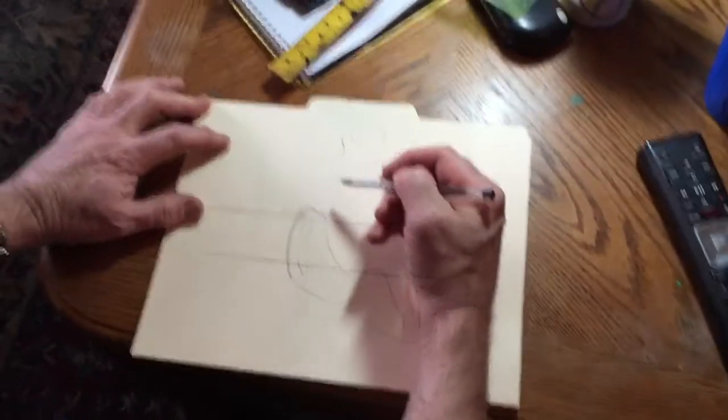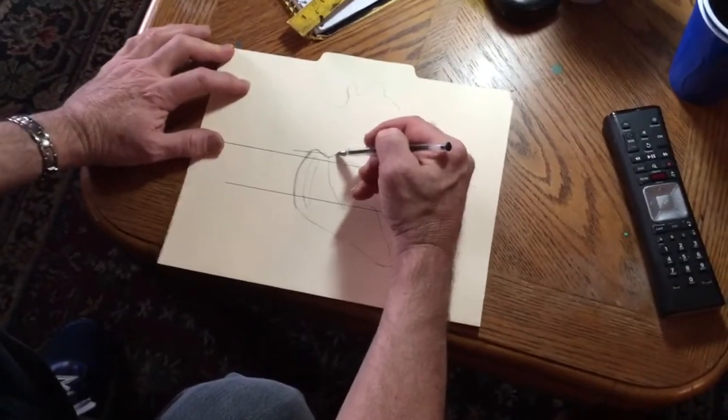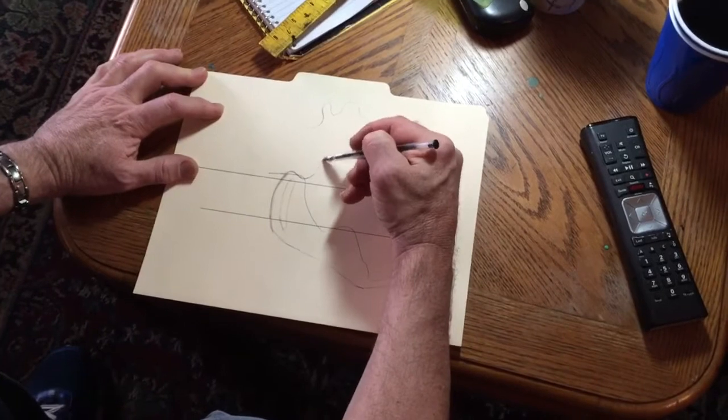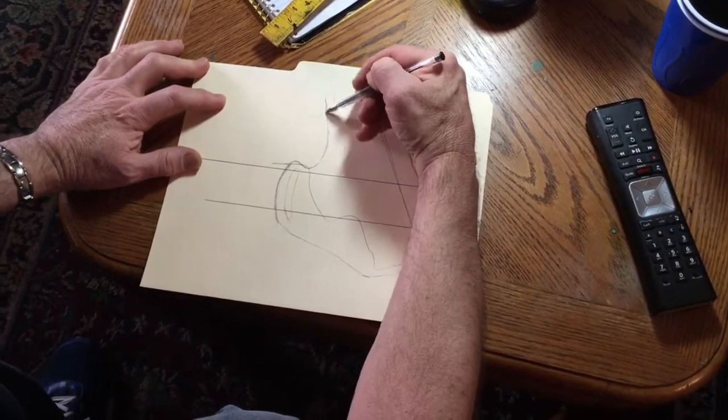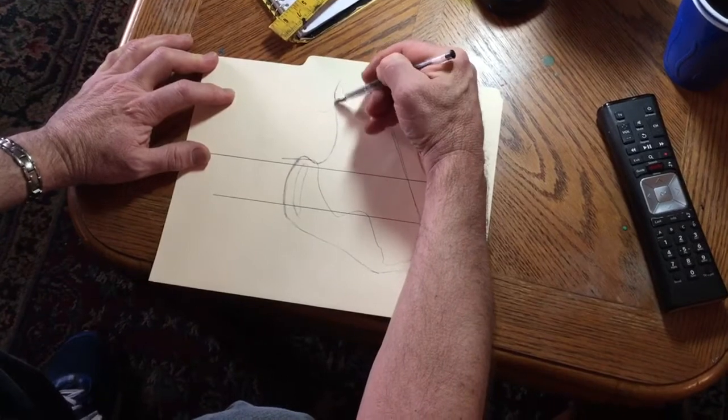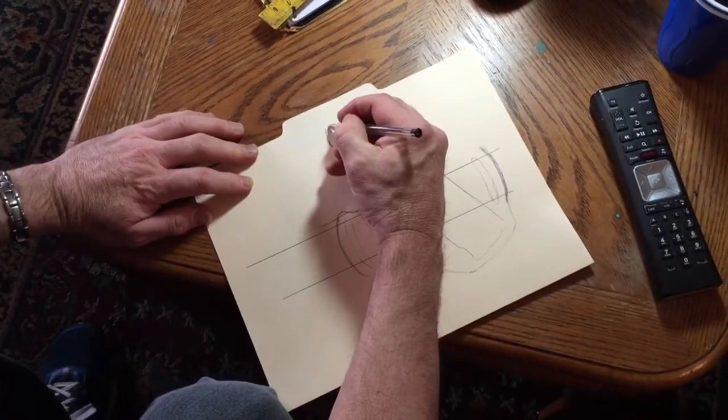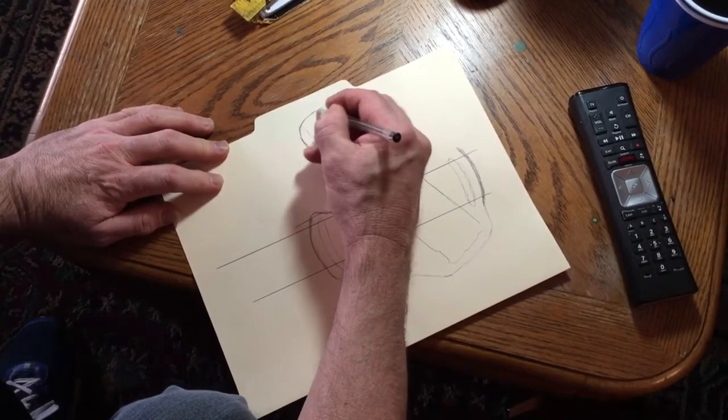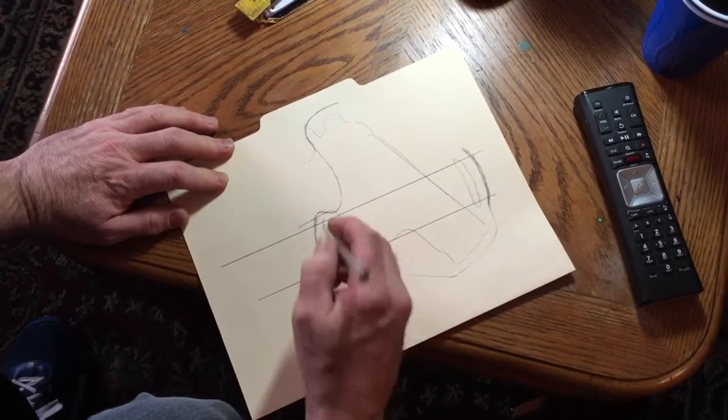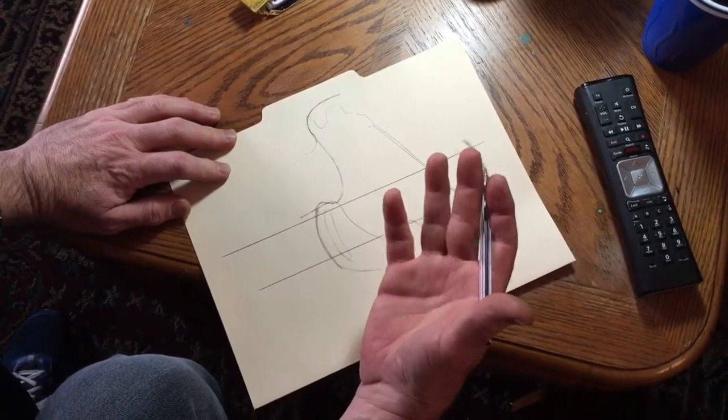Now, since this is going to be against the body, the back panel, I do want to come up behind the beaver tail and the slide. Back panels are a pet peeve with me. I see back panels that are drawn clear out here.